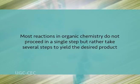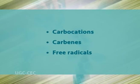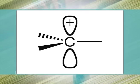Most reactions in organic chemistry do not proceed in a single step but rather take several steps to yield the desired product. In the course of these multi-step reactions, short-lived intermediates can be generated that quickly convert into other intermediates, reactants, products, or side products. As these intermediates are highly reactive, they cannot usually be isolated, but their existence and structure can be proved by theoretical and experimental methods. These intermediates are called reactive intermediates, and examples include carbocations, carbenes, and free radicals.